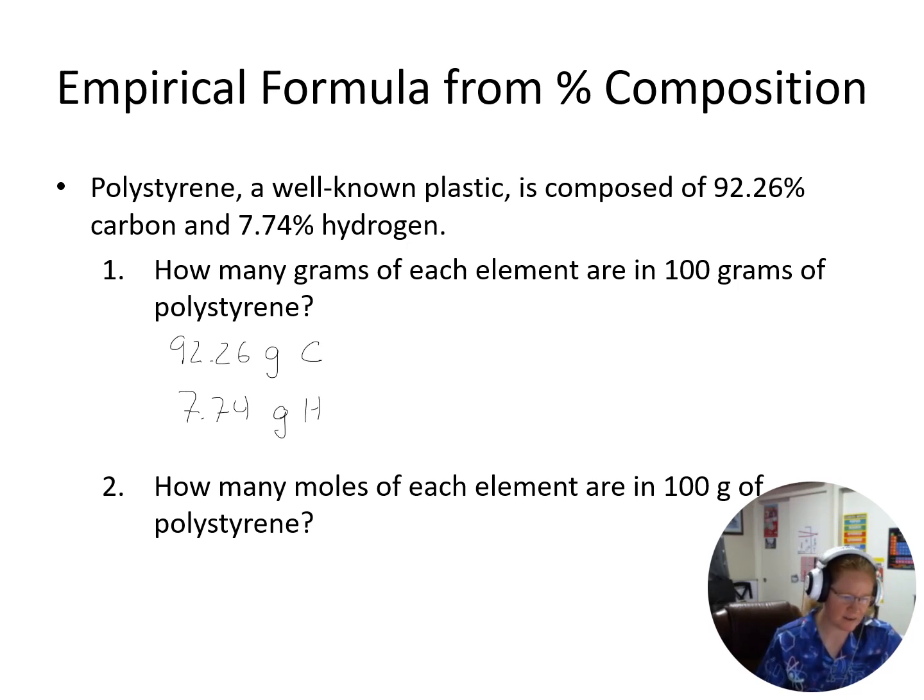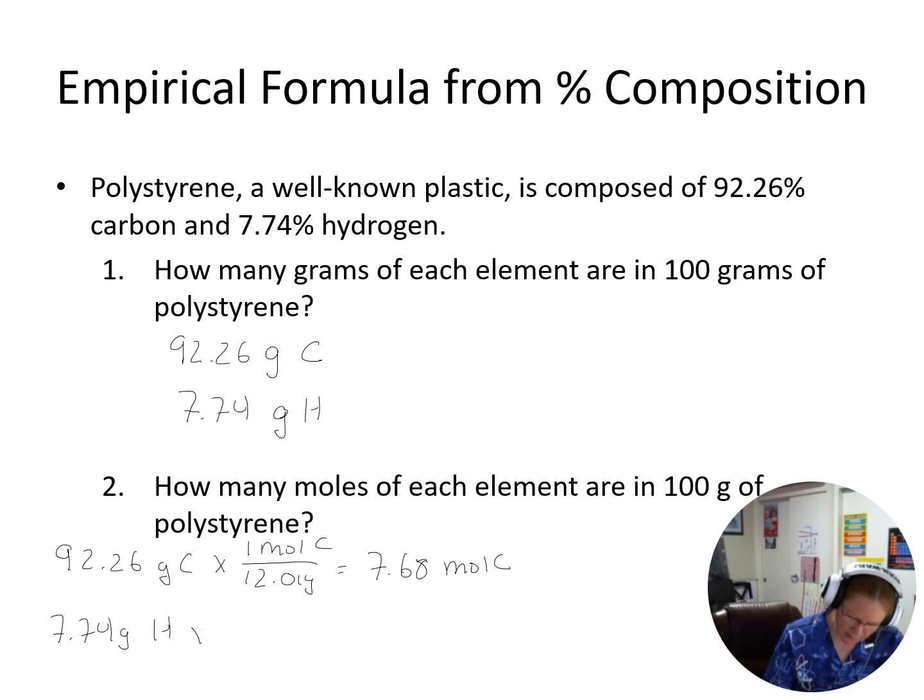So in my 100 grams there, how many moles of each? So I'm going to take 92.26 grams of carbon, one mole, and 12.01 grams. I get 7.68. 7.74 grams of hydrogen times one mole, and 1.008 grams, and I get 7.68. This one's going to be easy.